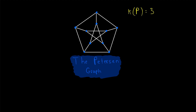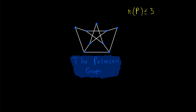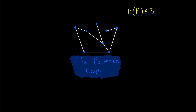Showing that the vertex connectivity of a graph equals a certain number basically takes two steps. First, for this example, we'll show that the vertex connectivity of the Petersen graph is less than or equal to three. This just means that the graph can be disconnected by deleting three vertices. We can't disconnect the graph by deleting just any three vertices, as we see there, but we can disconnect it if we delete the right three vertices, as we see here. We see that we can disconnect the Petersen graph by deleting three vertices.